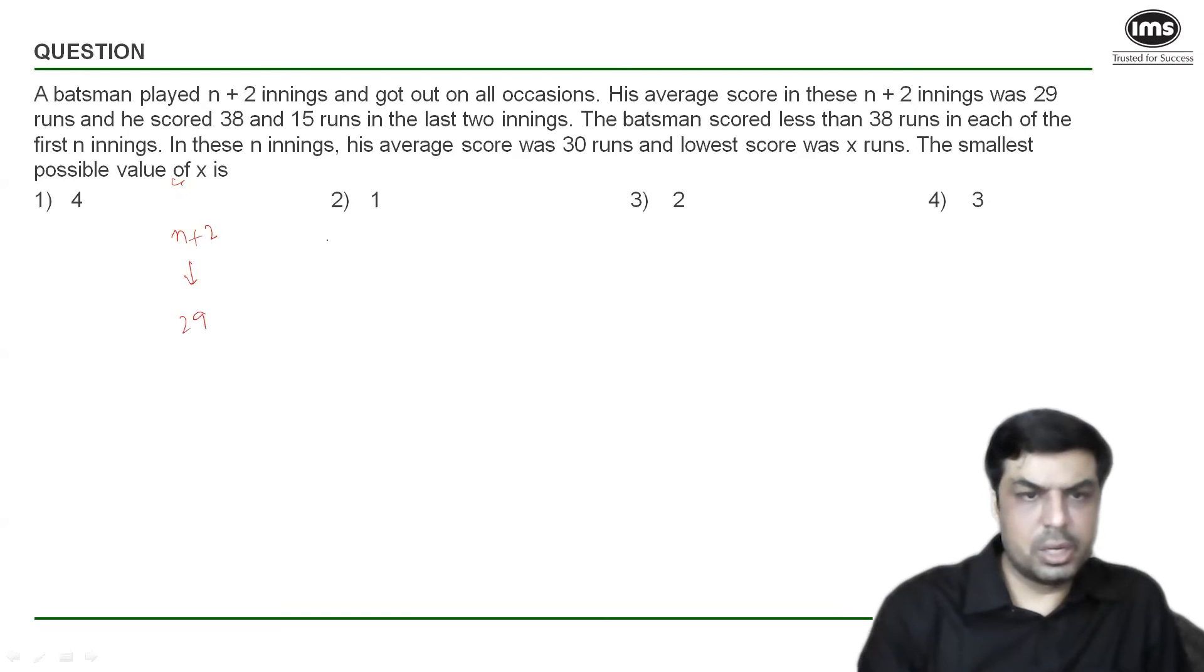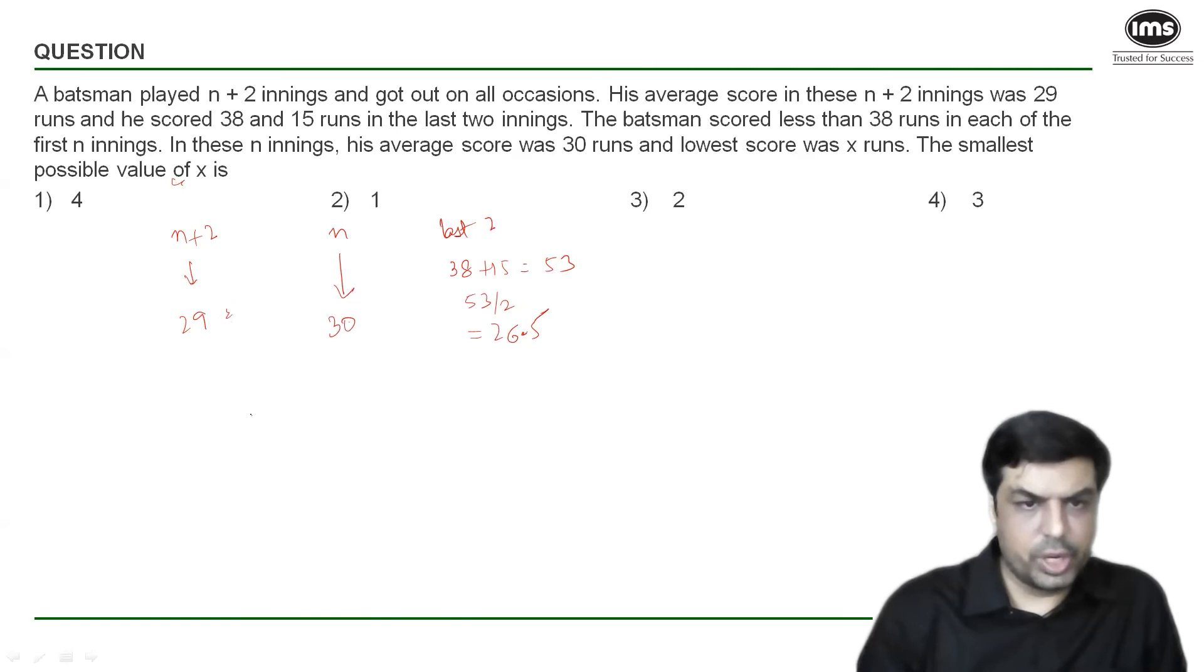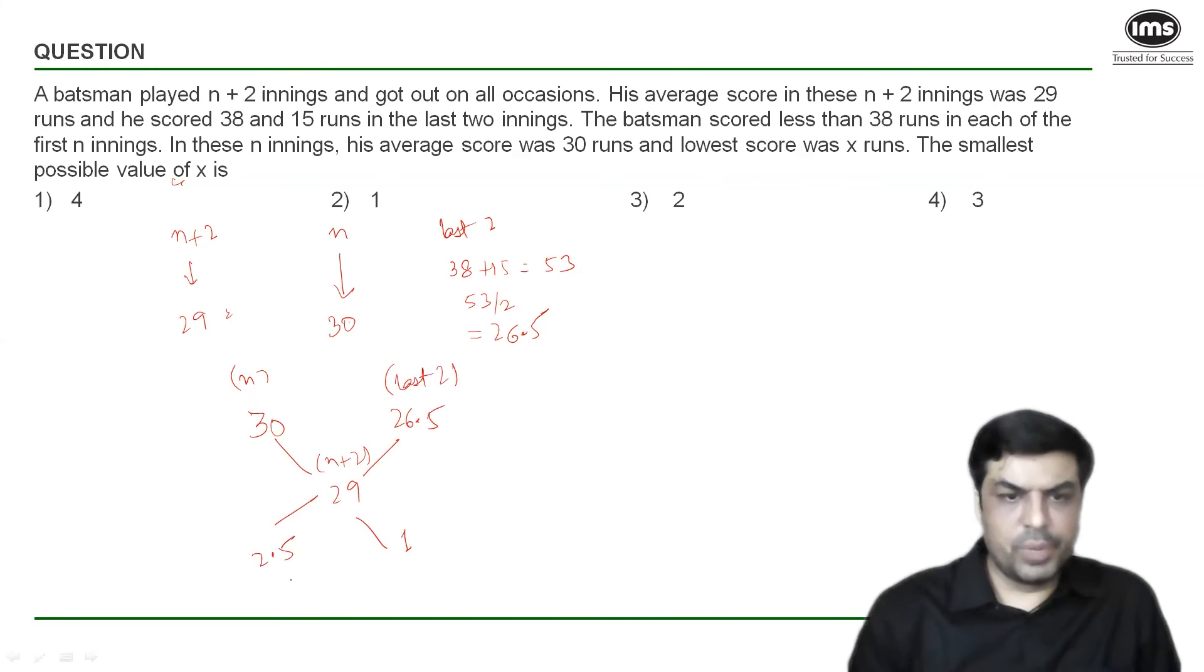Average after n plus two innings is given as 29, average after n innings is given as 30. In the last two innings the batsman scored 38 and 15, 53 runs, so his average in the last two innings is 26.5. Which means all the three averages are known and we could have also done this question on an allegation diagram. So if I draw the allegation diagram, the higher average value here is 30 which is for n innings, the lower value is 26.5 which is for the last two innings and the average is 29 which is for all the n plus two innings. If we subtract now 30 minus 29 is 1, 29 minus 26.5 is 2.5.